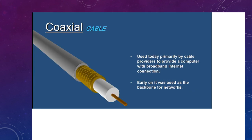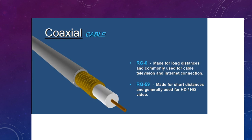We also have coaxial cables, used by cable TV providers to provide broadband internet connection. Coaxial cables are of two kinds: RG6 and RG59. RG6 is made for long distances and is commonly used for cable television and internet. RG59 is made for short distances and is generally used for high-definition and high-quality video.